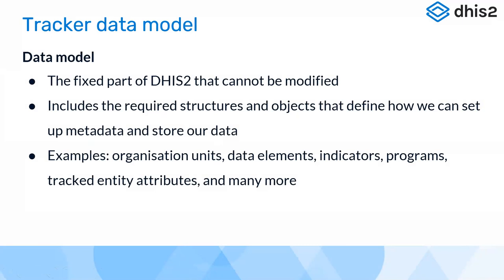What is the tracker data model? Basically, the DHIS2 data model is the fixed part of DHIS2 that you cannot change. Just imagine a building where you are renting out stores or shops - the building structure you cannot change, although you can have different types of shops like grocery or electronics. Similarly in DHIS2, the data model is something you can't change, but being so generic, you can adapt it and customize DHIS2 to suit your workflow.